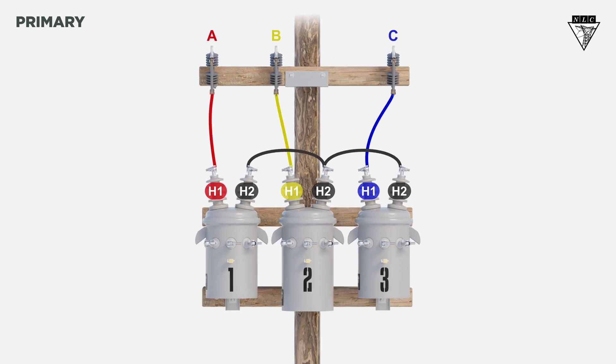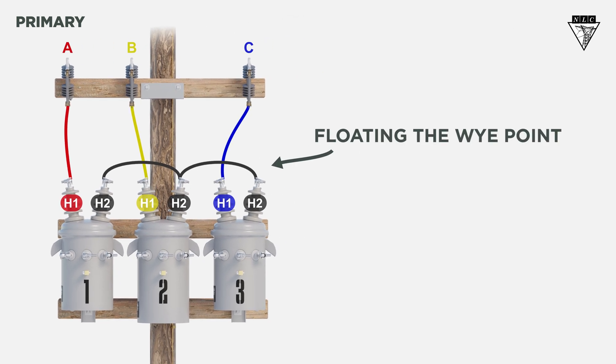Notice how each transformer in a wide delta bank is connected to a phase, but not grounded to a neutral. We call this floating the Y-point. The industry uses a saying to help remember whether to ground the neutral or float the neutral on the primary side.